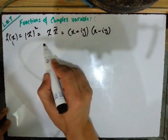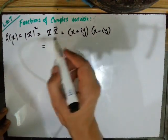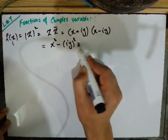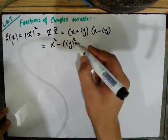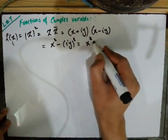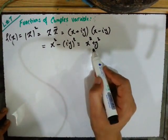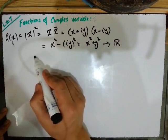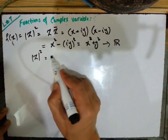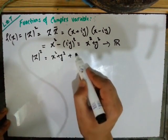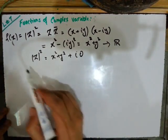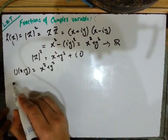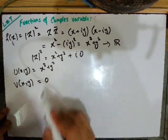Since i² = −1, we get x² − (−y²) = x² + y². So for this particular function f(z) = |z|², the real part u(x,y) = x² + y², and the imaginary part v(x,y) = 0.